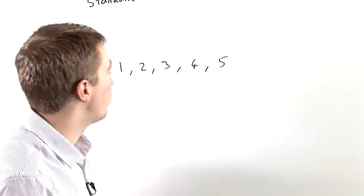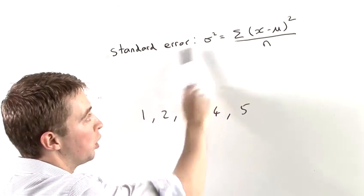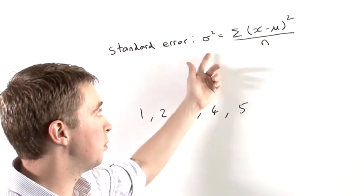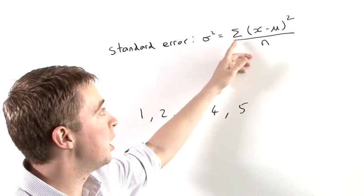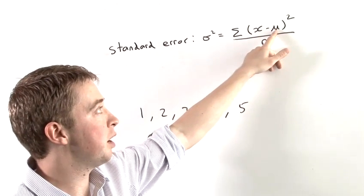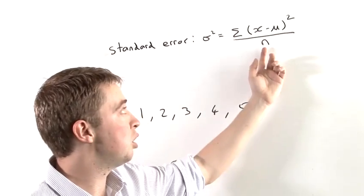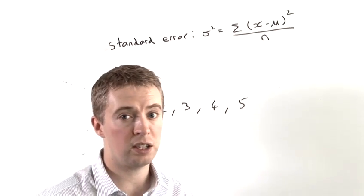So we have this equation here, which is the standard error. We're going to call it sigma, and we're squaring it for the purposes of this. It's the sum of the data minus the value of the mean, and you square it each time you do that, and then you divide it by the number of pieces of data that you have.